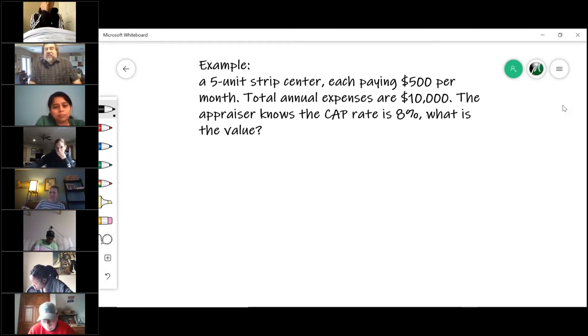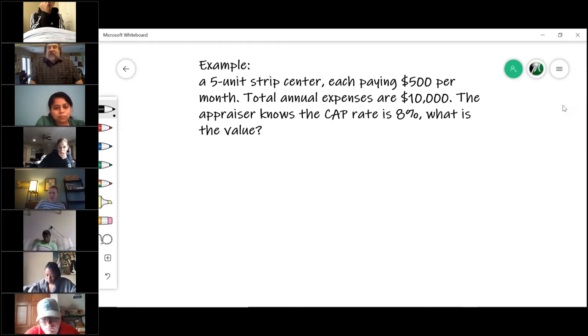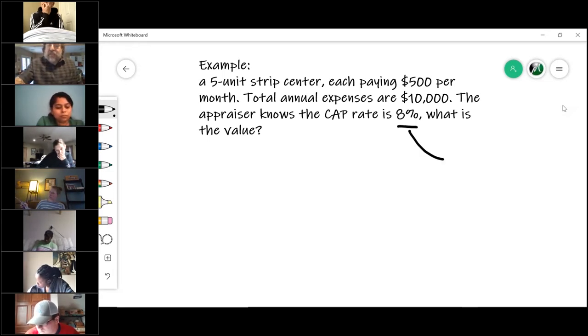So the question I'm asking you is, if this strip center has five units and each is paying $500 per month, the total annual expenses are $10,000 and the appraiser knows the cap rate is 8%, remember, you don't know how to figure this, so it will be given to you. I'm asking you what is the value of this property?